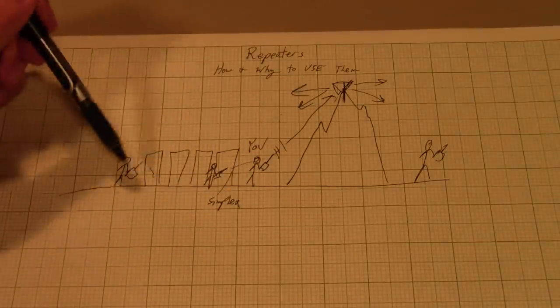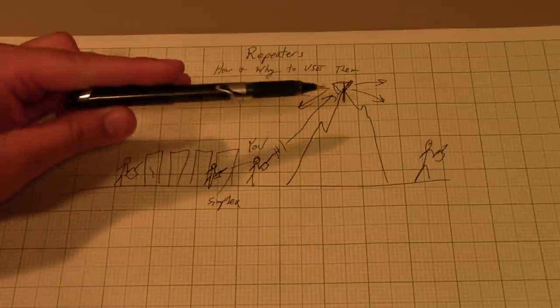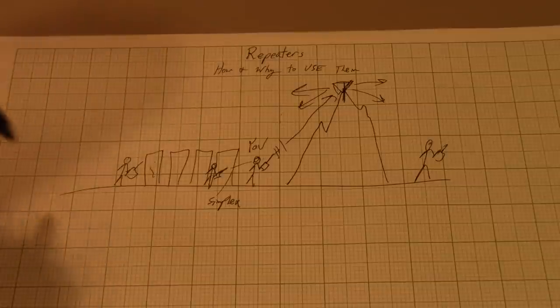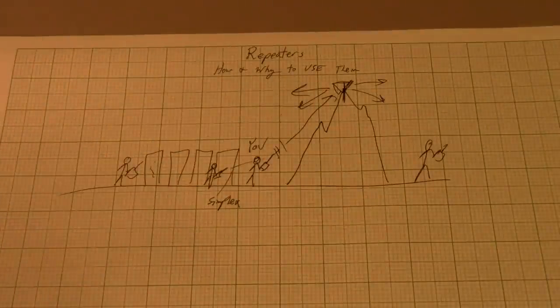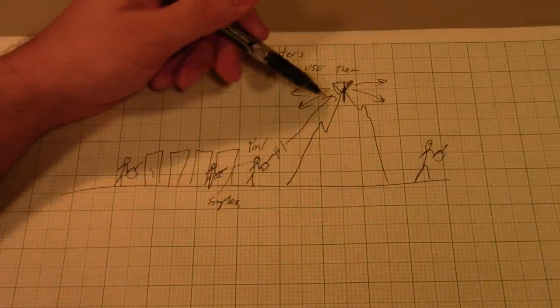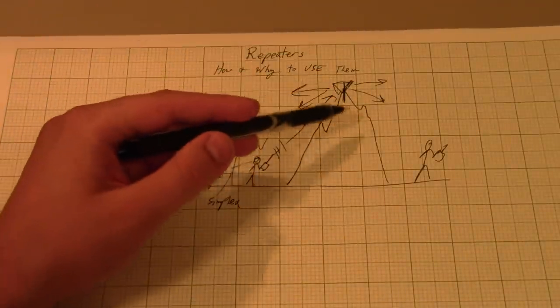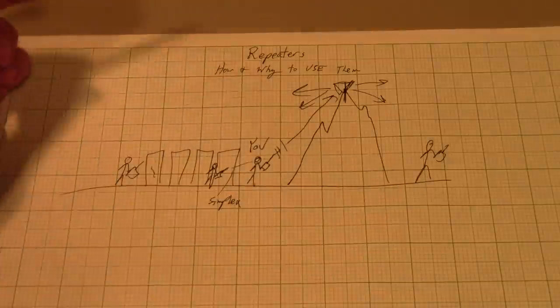The advantage here is that the transmitter will likely be transmitting with more power than you have, it will be transmitting to a better antenna than you have, it will be transmitting from a much better location than you have. You can be down anywhere in the city and look up and be able to see this repeater, and this repeater can then look down and see all of the different users that you want to talk to. So when you transmit up to it, it retransmits it, and your buddy over here can hear it.